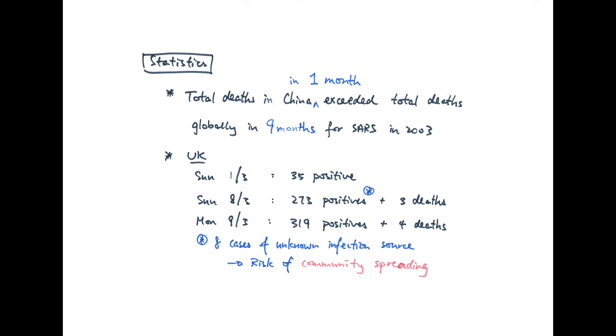When the virus started spreading initially, it killed many people in China. The total number of deaths in China occurred during that first month exceeded the total number of deaths caused by SARS globally in 9 months, which is in 2003.